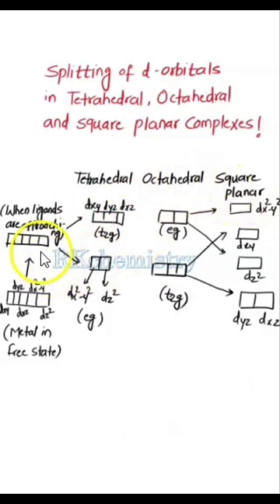In octahedral complexes, these d orbitals get split into two energy levels. First one is t2g, second one is eg.